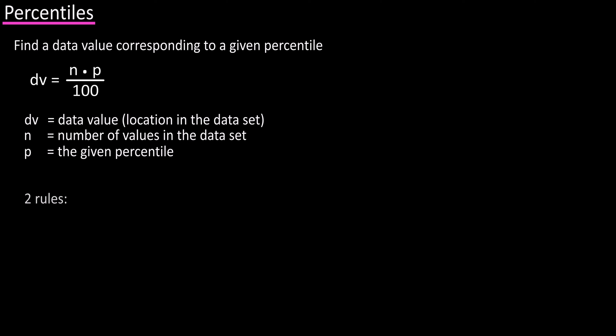And there are two rules for this formula. If the formula results in a non-whole number, round up to the next whole number. For instance, if the formula produced 3.5, round up to 4.